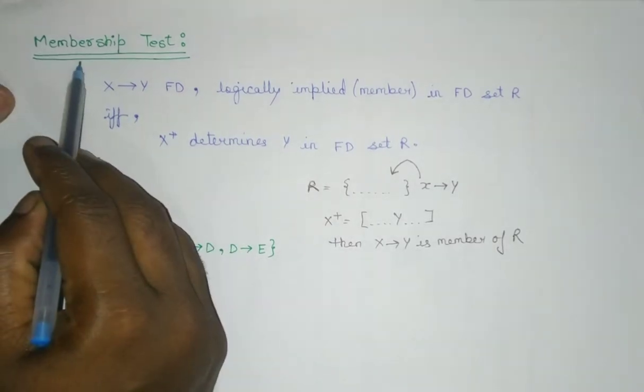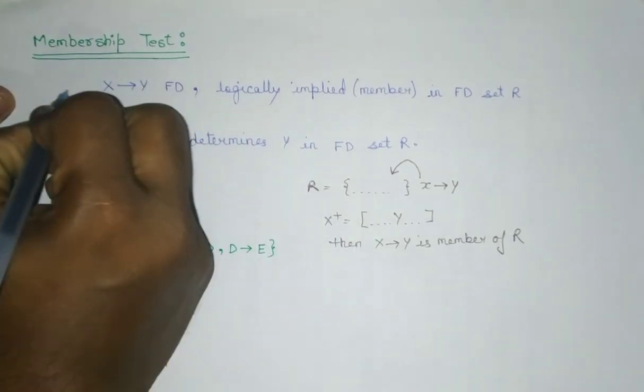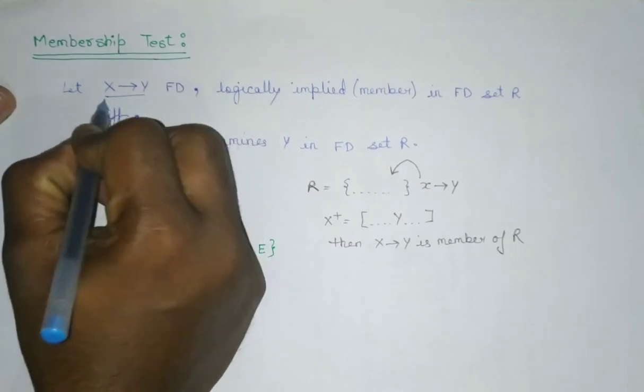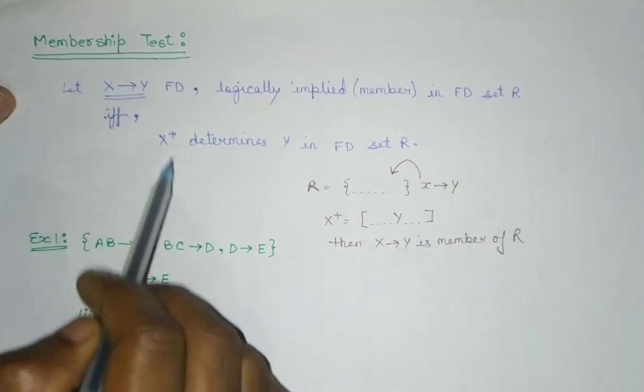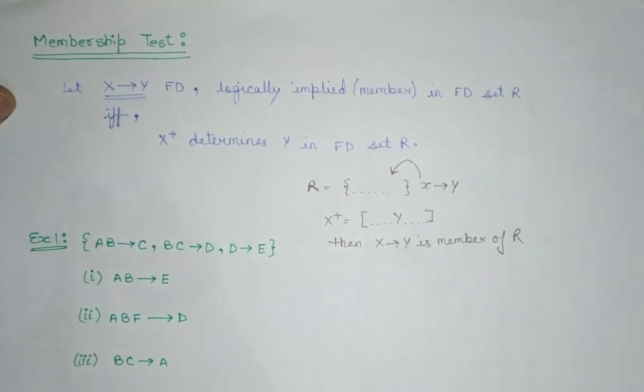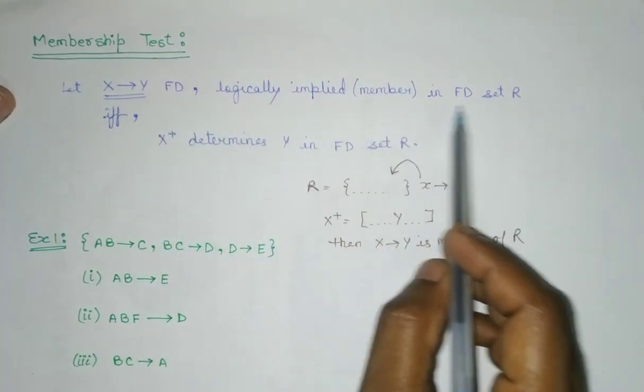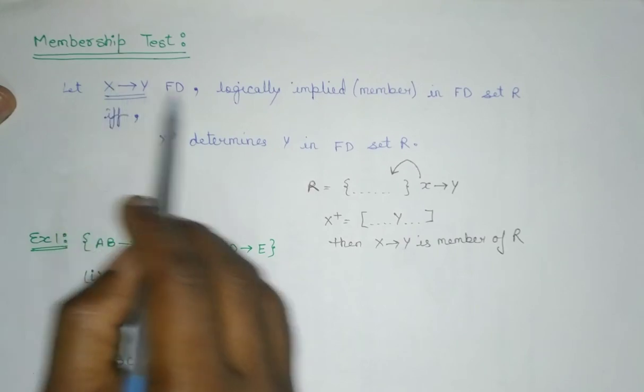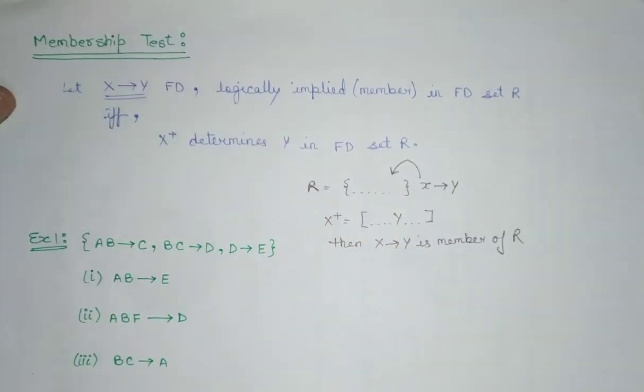To understand the membership test, firstly we have to consider that let X defines Y is a functional dependency. What is the meaning? That X is determining Y is the given functional dependency that we need to check whether it belongs to a particular functional dependency set in a relation or not. So this is logically implied in FD set R. This functional dependency logically implied in functional dependency set in a relation R,